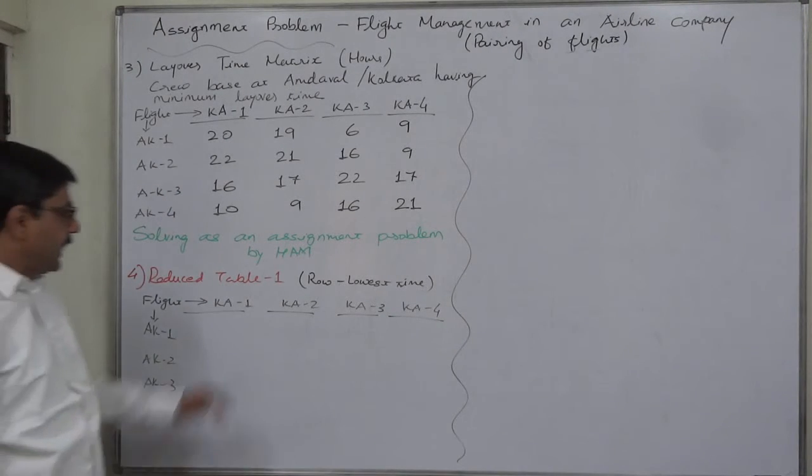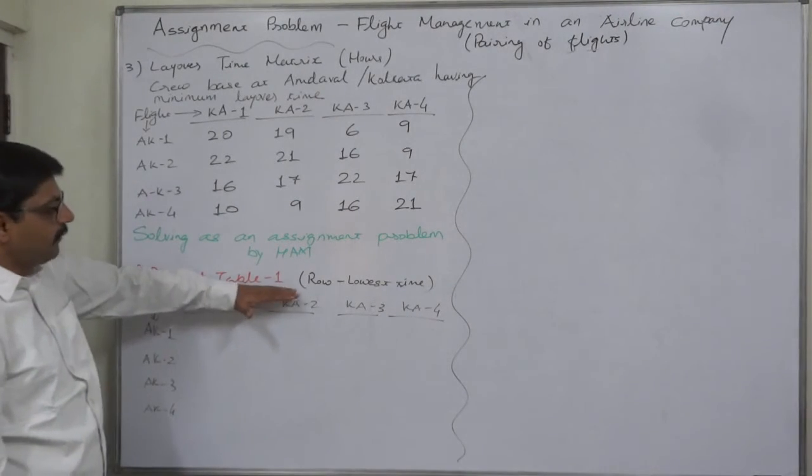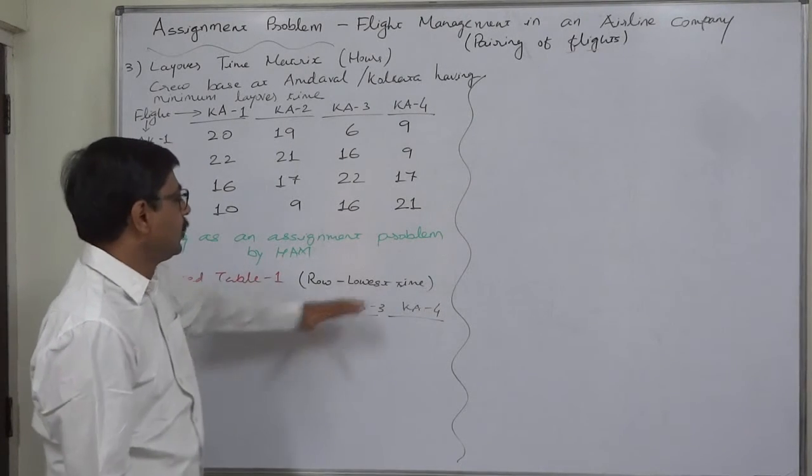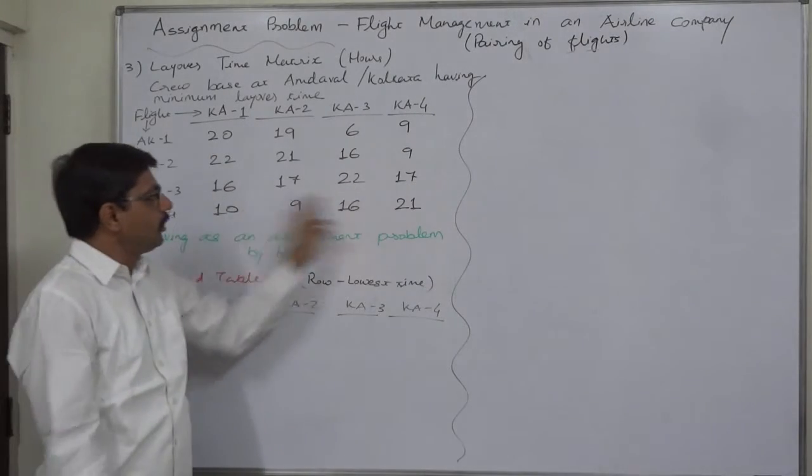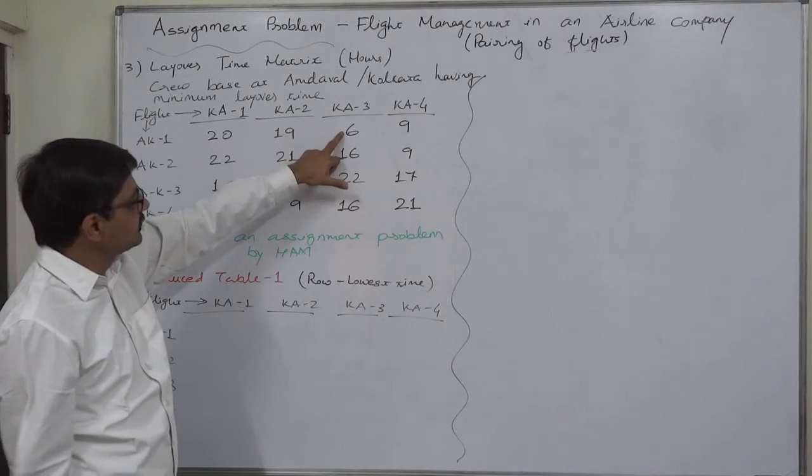Now solving the assignment problem by H.A.M., Hungarian Assignment Method. For this purpose we have to prepare first a reduced table. That will be reduced table 1. And the rule for preparing the first reduced table is row minus lowest time. From each and every row we are going to subtract the lowest time.